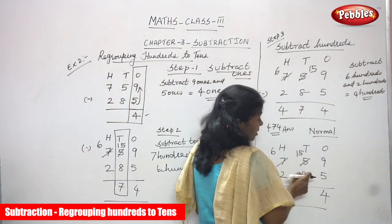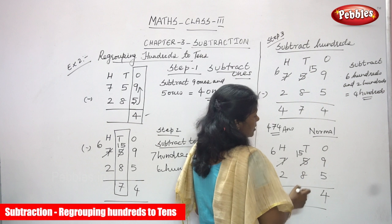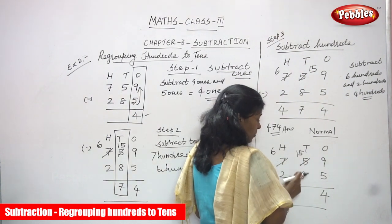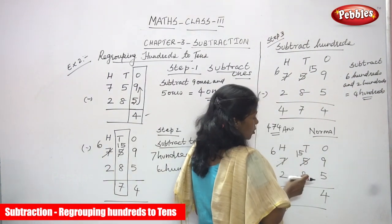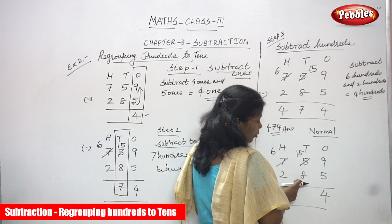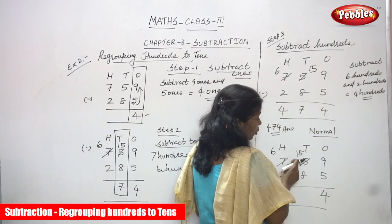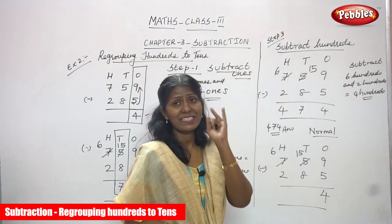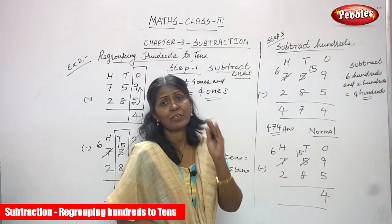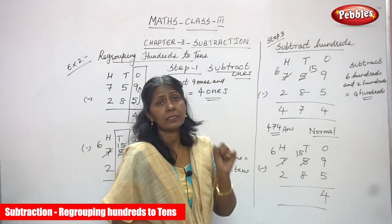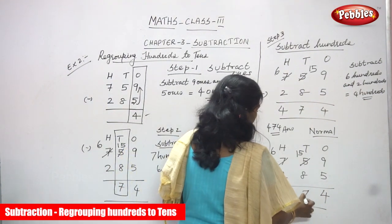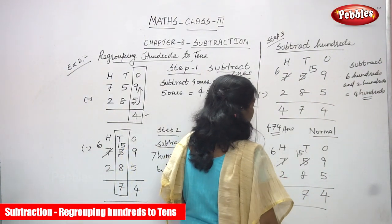Fifteen is now the greater number. Fifteen minus eight: use backward counting — after eight, count nine, ten, eleven, twelve, thirteen, fourteen, fifteen. That is seven. Write seven in the tens place.